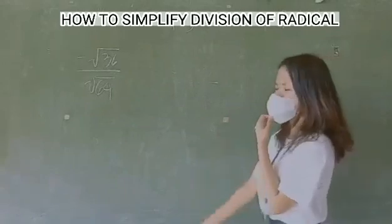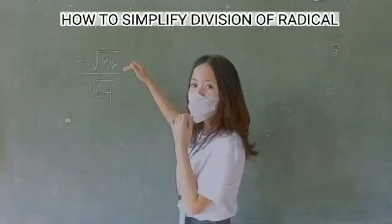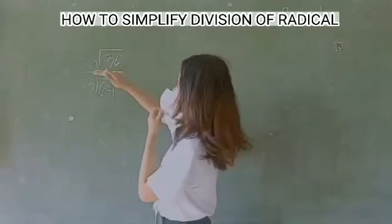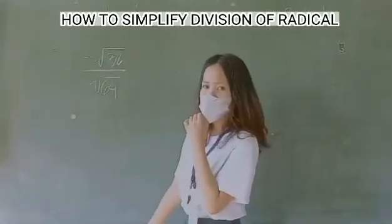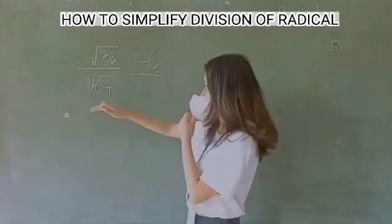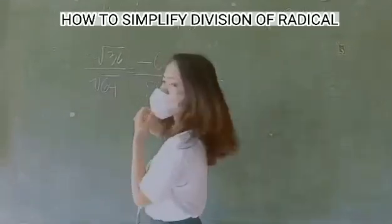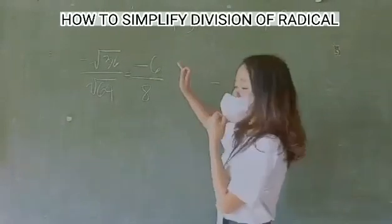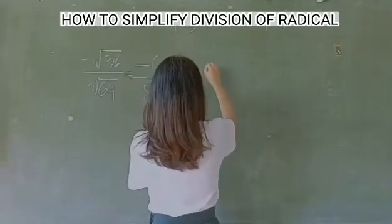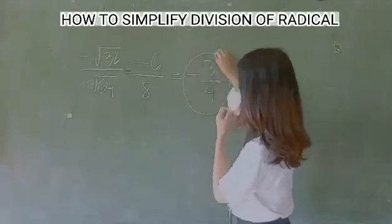Simplify the division of radicals. All we have to do is take the square root of our numerator and our denominator. What is the negative square root of 36? It is negative 6. How about the denominator — what is the square root of 64? It is 8. Is that our final answer? No — we reduce to lowest terms, so the final answer is negative 3 over 4.